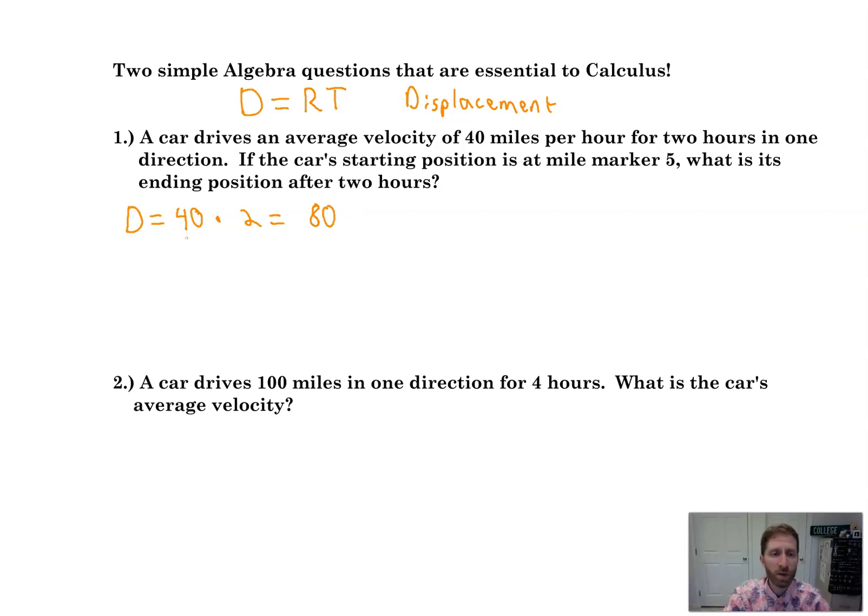Now, what are the units? Well, 40 was in miles per hour. The two was in hours, said that right here in the word problem. And so the hours divide out and you're left with miles. So it's very simple. Now, what does this look like though? And what are we actually being asked? Because we haven't gotten to the question yet.